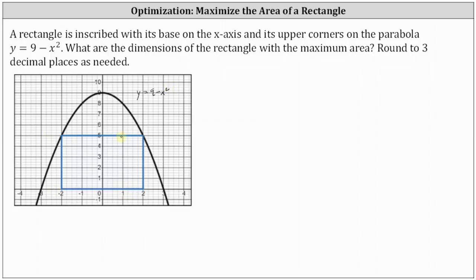Let's find the dimensions of this rectangle in terms of x. Along the x-axis, this distance here is equal to x, and therefore the total length along the x-axis is equal to 2x. The height of the rectangle is given by y, where y equals 9 minus x squared, so the height is 9 minus x squared.